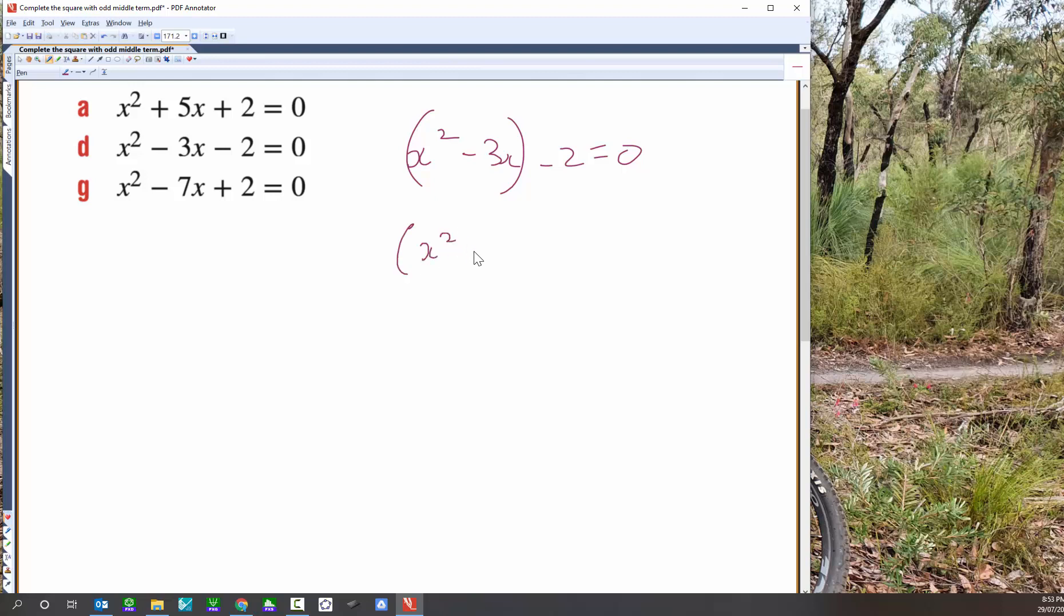So we're going to complete the square by halving 3, which is 3 on 2, squaring it, and adding it. And it's always add, because we always complete the square by adding something to an incomplete square. What I've got to do then is take away 9 on 4, so subtract 3 squared, which is 9, 2 squared, which is 4.